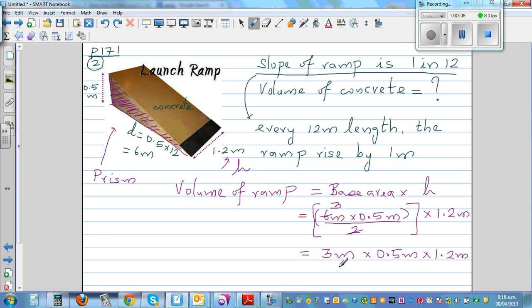So use your calculator and you will find that will be 1.8 meter cube. Because you've got meter times meter times meter. So the volume of this concrete used in this ramp is 1.8 meter cube.